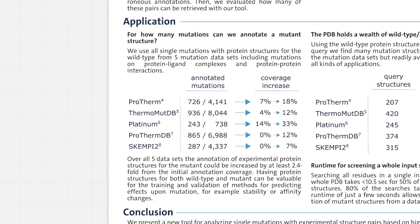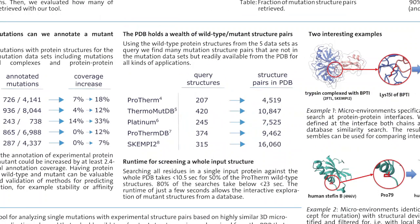Regardless of the mutations in these mutation datasets, the PDB holds many more wild type-mutant structure pairs that are readily available for different applications. When we use the wild type proteins from the mutation datasets for searching the PDB, we find thousands of unique protein structure pairs, which makes it exciting to explore how many pairs there are throughout the whole PDB.